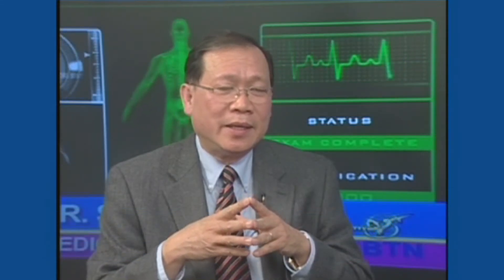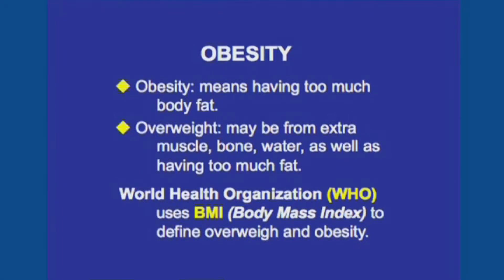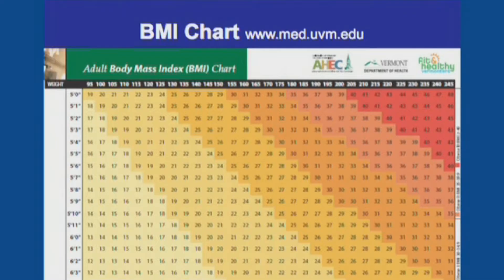Obesity is considered a medical problem right now. To differentiate between obesity and overweight, the World Health Organization, the WHO, uses the BMI — the body mass index — to help differentiate the two. Obesity means having too much fat in the body. Overweight could be related to fat, but it could also be caused by bones or muscles. People with heavy bodies due to muscle mass would use the body mass index to figure out which group is normal and which really has obesity.